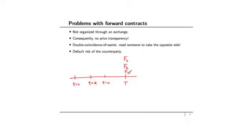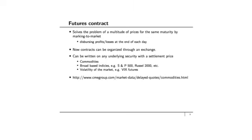So one needs a contract that works like a forward contract — that's able to fix prices sometime in the future — but is able to solve these other problems associated with forward contracts. That is, it's organized through an exchange, there's price transparency, you can get in and get out of this contract very easily, and there is no single counterparty — you're contracting through brokers who are organized in an exchange. One such contract is called the futures contract. It solves the problem of the multitude of prices for the same maturity by marking to market — it just gives the profits and losses at the end of the day, so there's a single price for a single maturity.